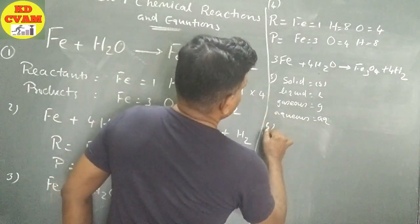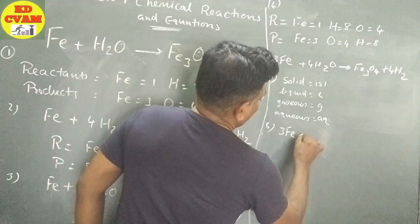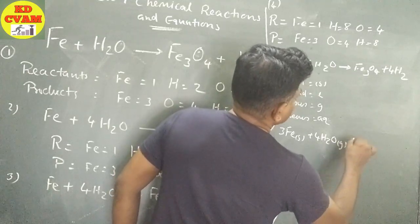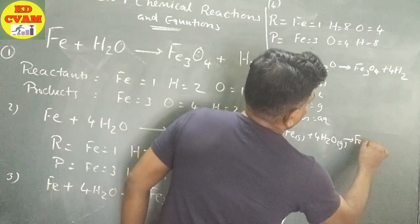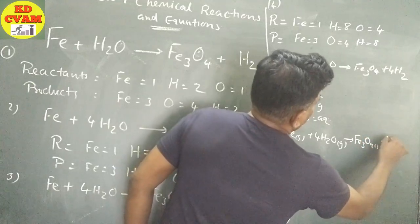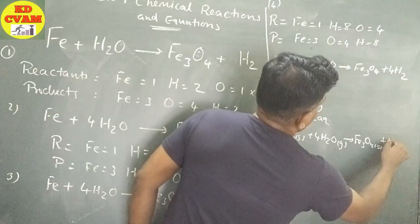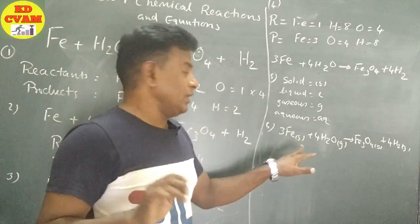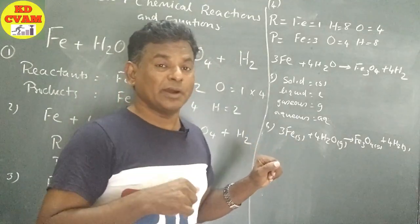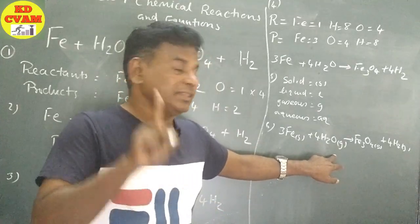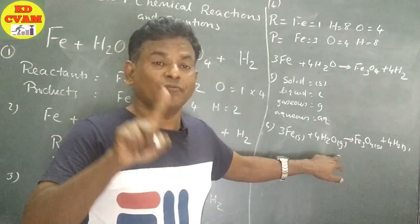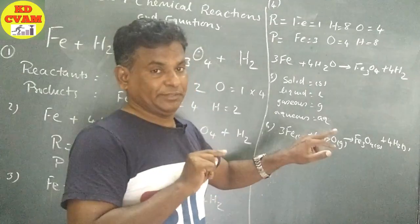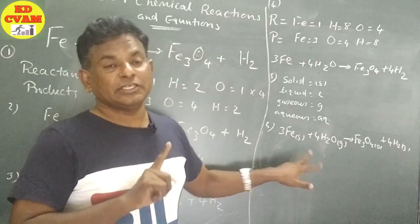So let us write the physical states. 3Fe(s) plus 4H2O. We write (s) for solid. If it is a gas, we write (g). Fe3O4 is solid, so Fe3O4(s). 4H2 is gas so 4H2(g). That means water is used in the form of steam. This way our chemical equation is balanced with physical states included.